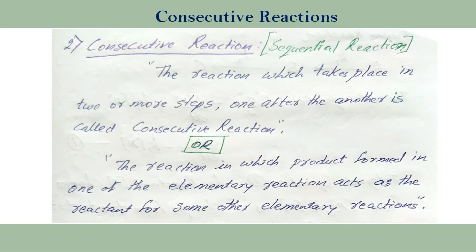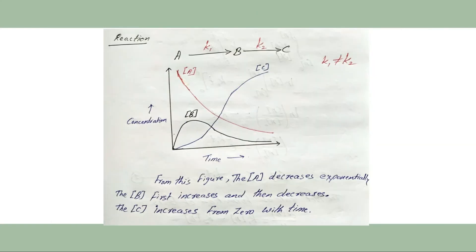Now let us look at consecutive reactions, also called sequential reactions. These are reactions which take place in two or more steps, one after another. In a consecutive reaction, the product formed in one elementary reaction acts as the reactant for the next elementary reaction. As seen here, A is converted into product B, and that product B further undergoes reaction to form product C.